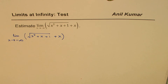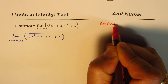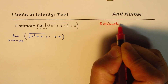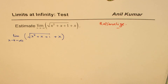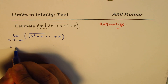Whenever you have square root functions like this, rationalization is the process by which you should proceed. So we'll rationalize this. Always rationalize first, and then you can easily find the solution. So we could write this as equal to the limit as x approaches minus infinity.